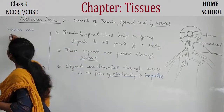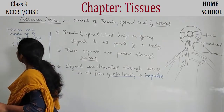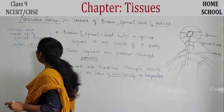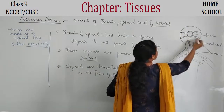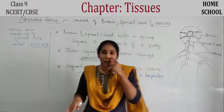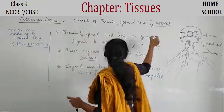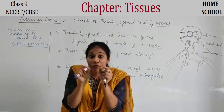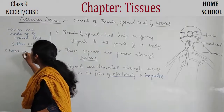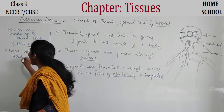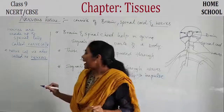Nerves are made up of special cells called nerve cells. Even the brain has nerve cells, and the spinal cord has nerve cells. So brain, spinal cord and nerves together are called nervous tissue, and each part is made up of cells called nerve cells, which are also called neurons.